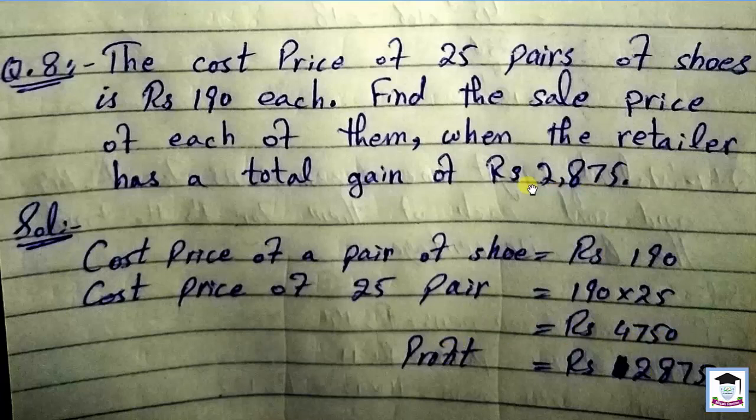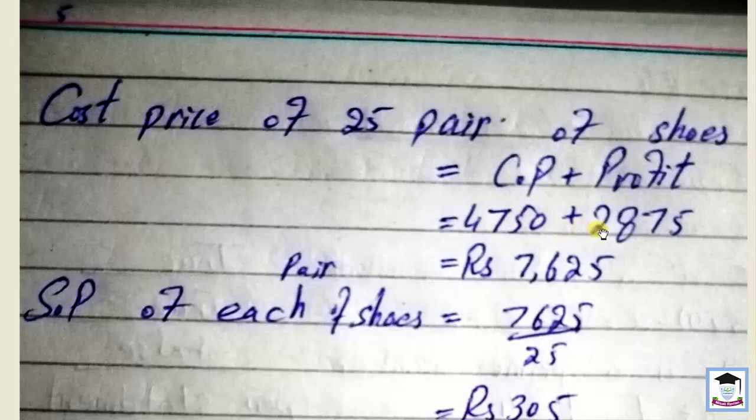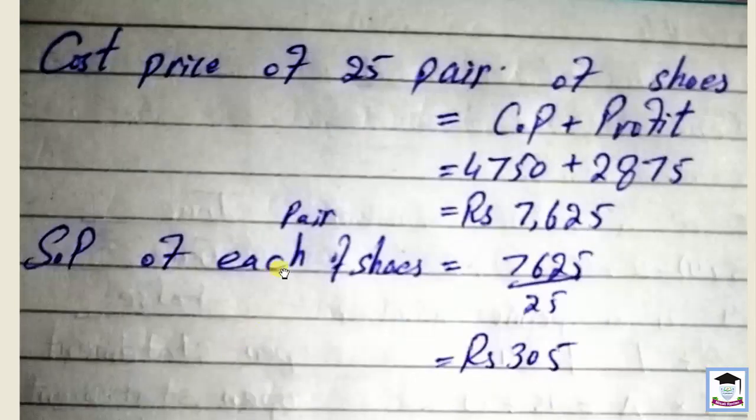Cost price plus profit equals sale price. 4750 plus 2875 equals 7625 total sale price. Sale price of each pair: 7625 divided by 25 equals 305 rupees per pair.